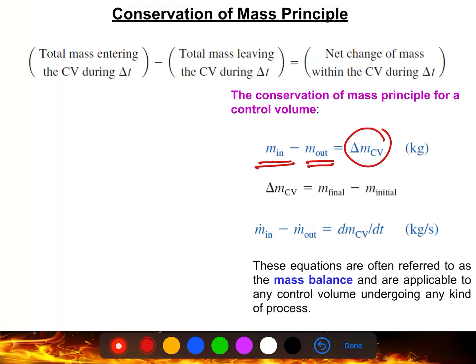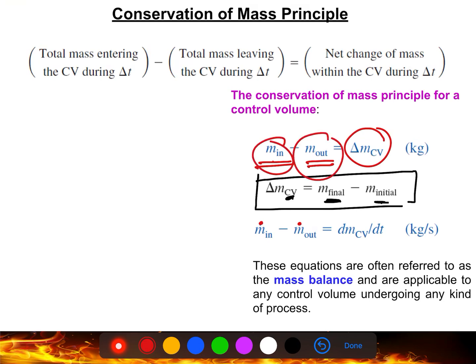Delta m_cv is the net change of mass in the control volume — the difference between final mass and initial mass. If we want the rate of change with respect to time, we put a dot: m-dot in and m-dot out. Dividing by time gives us dm_cv/dt, which is the conservation of mass principle in rate form.